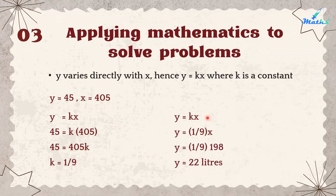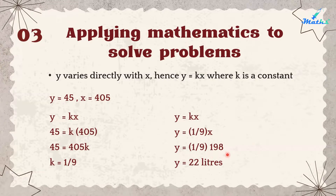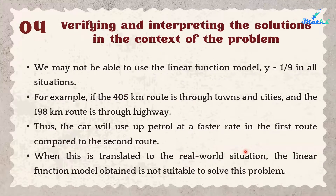Using the same formula with x = 198, since Fatima needs to travel 198 km, we substitute into y = (1/9)x. Our final answer is 22 litres of petrol required.